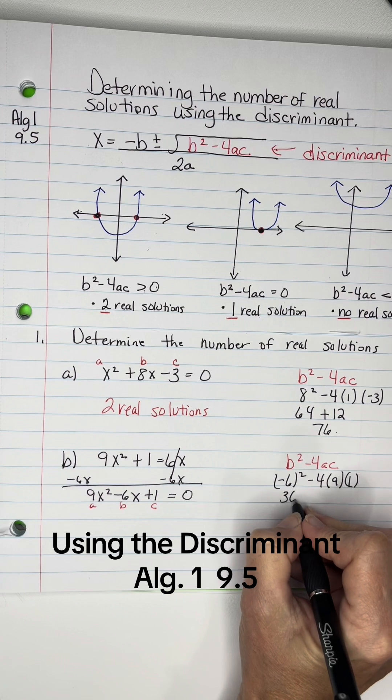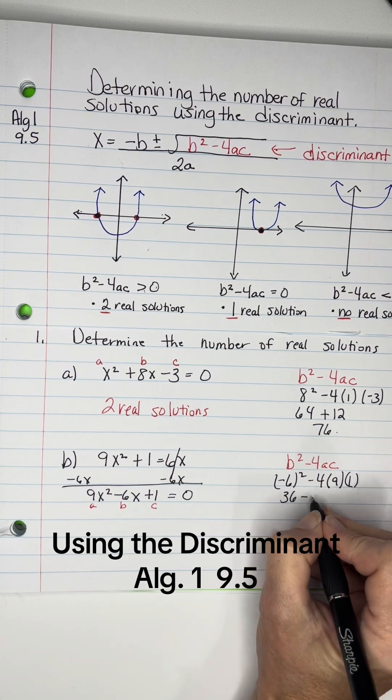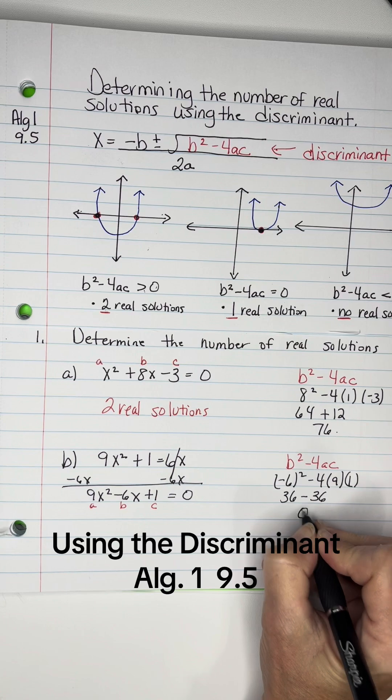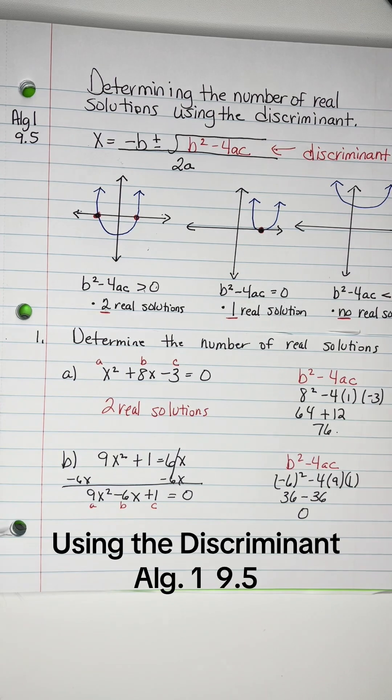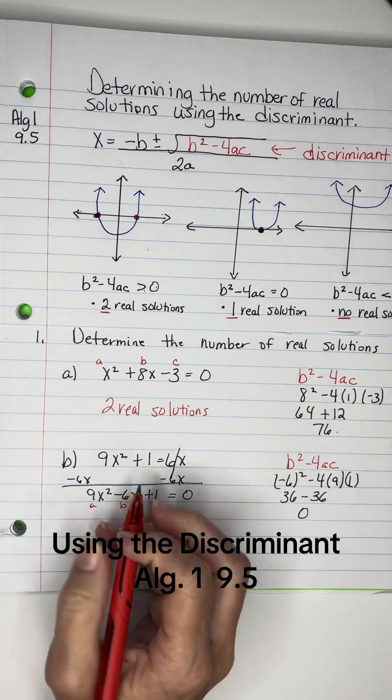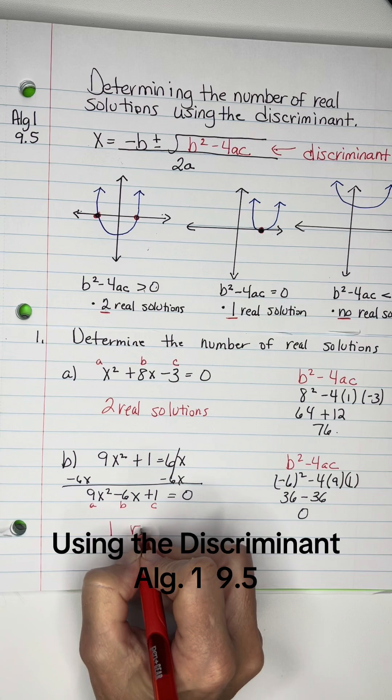So 36, and then that is a negative 36. And we got 0 here. So right here, if it equals 0, we have one real solution.